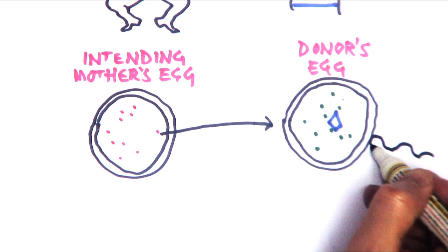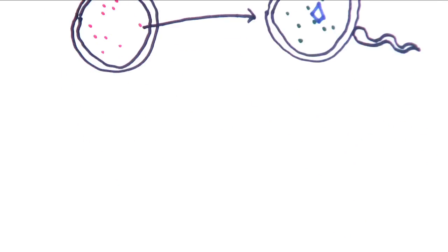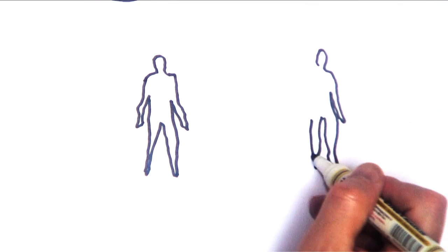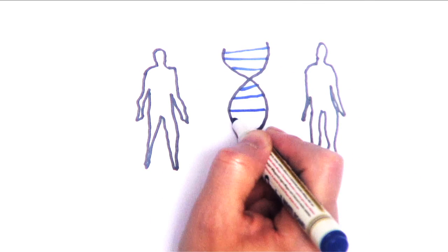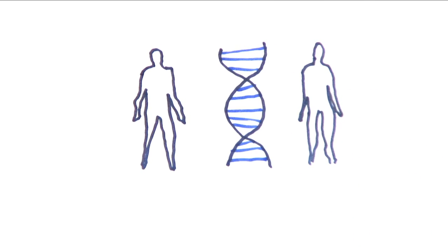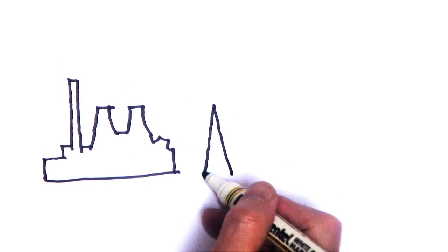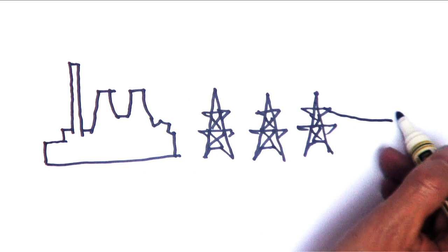Now, when the egg is fertilized by a sperm, the embryo will have nuclear DNA made from the intending mother and father's genes as usual, but with healthy mitochondria from a donor, unaffected by mitochondrial disease.